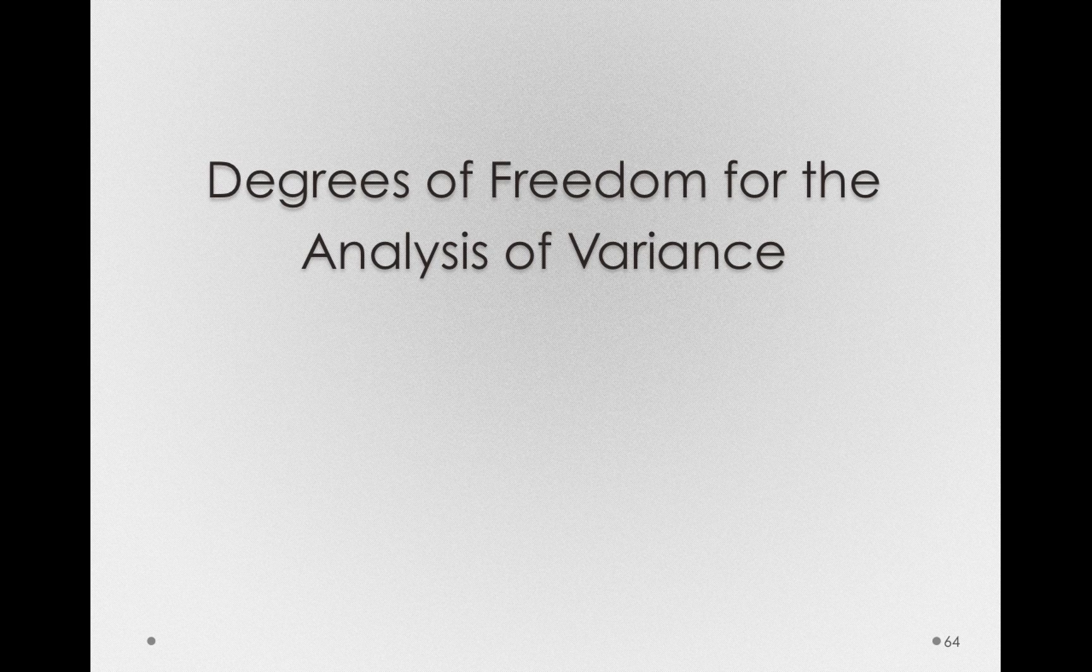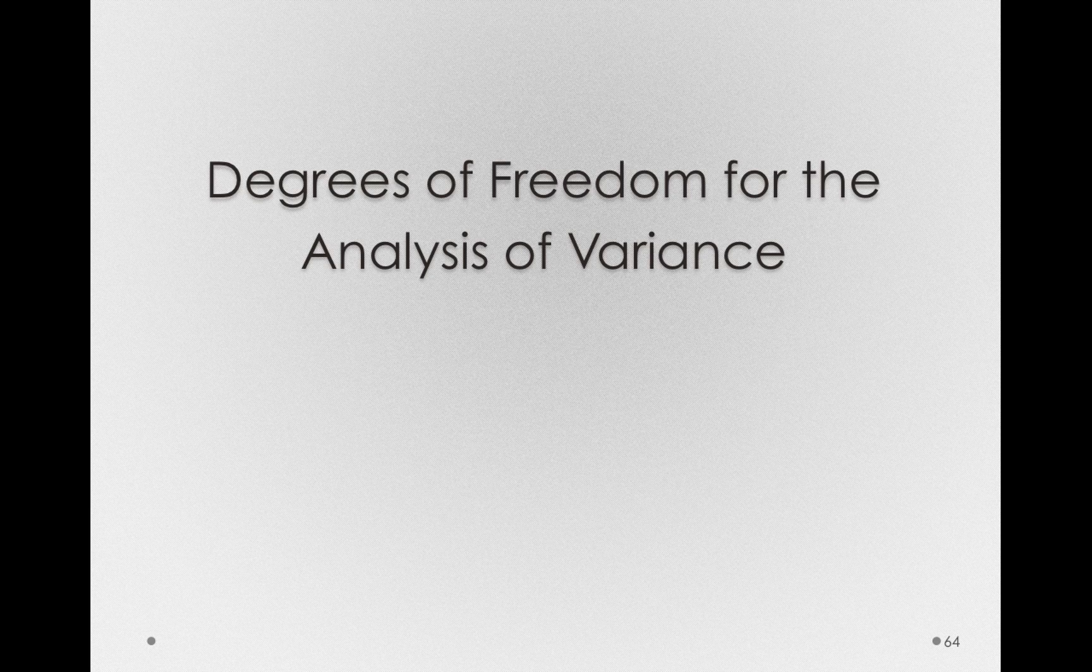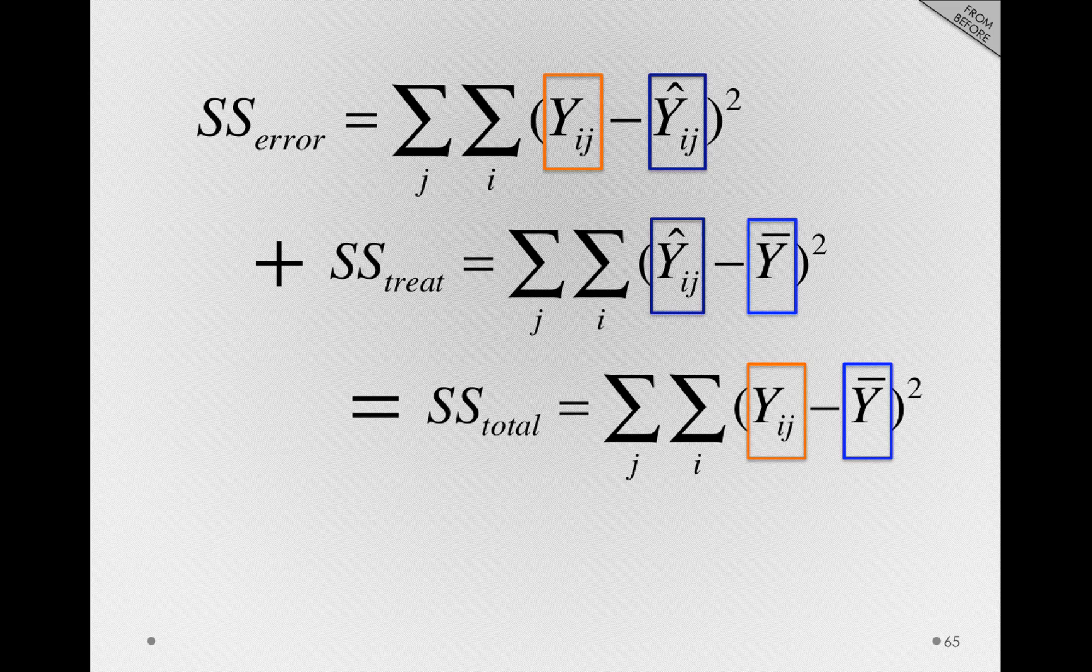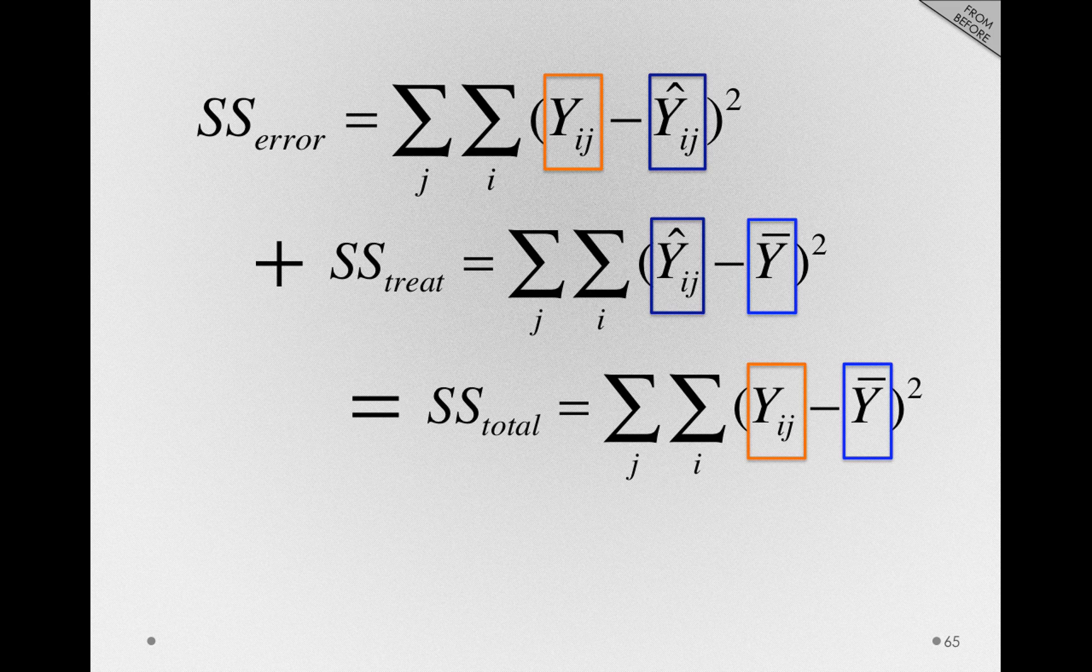The degrees of freedom for the analysis of variance decompose in the same way as our sums of squares. Remember, our sums of squares total was simply broken apart into sums of squares for error and sums of squares for treatment.